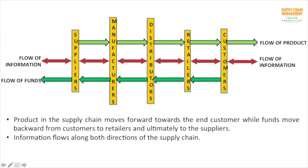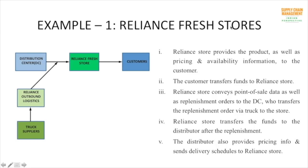Whenever retailers purchase products from distributors, they pay funds to distributors, and then distributors pay to manufacturers. So the flow of product goes in one direction and the flow of funds is in the opposite direction. The third flow is the flow of information — it has no fixed direction, it is unbiased and flows in every direction from one point to another, as will be explained through the next example.